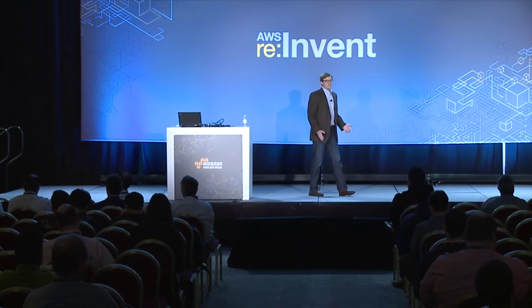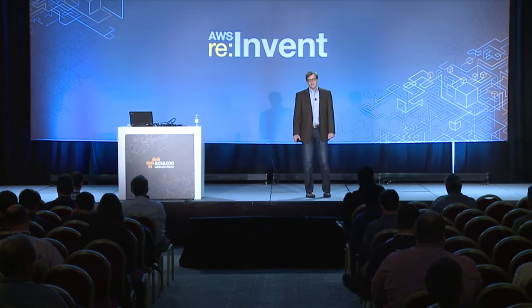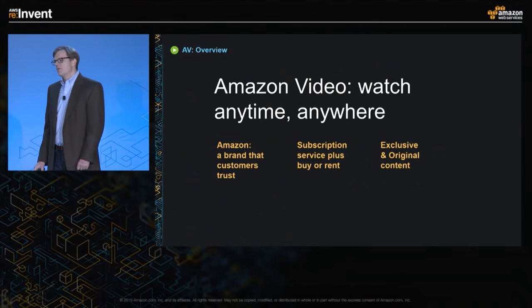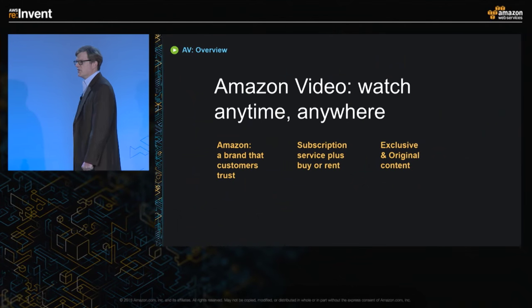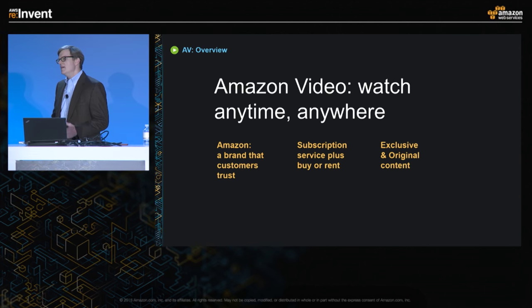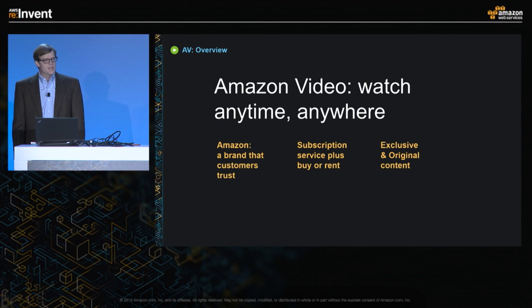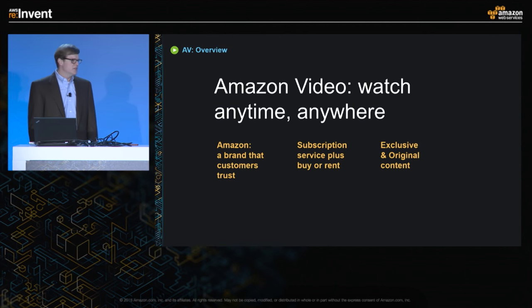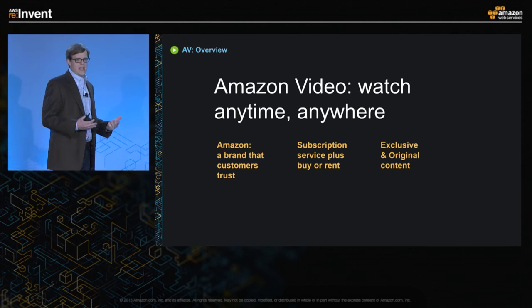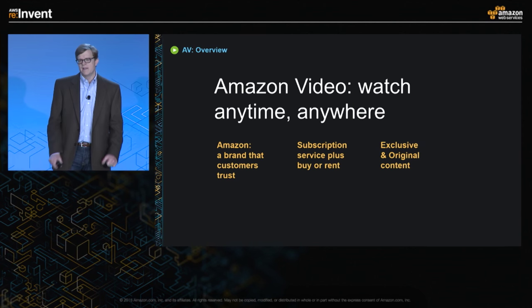A little bit about Amazon Video. Amazon Video offers Amazon Prime members tens of thousands of movies and TV episodes included at no charge with their Prime membership, and also access to over 100,000 titles to rent or buy. Amazon Video is the only video subscription service that also includes the ability to download subscription titles. And we're the only service that combines both the subscription, rent, and buy experience in one unified application.